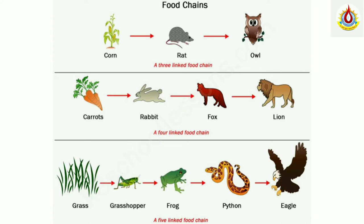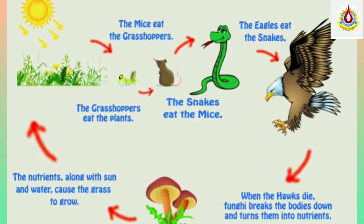A rat eats the corn and an owl eats the rat — this is called a food chain. With the help of the sun, the grass grows, and the grasshopper eats the plants. Then mice eat the grasshopper, the snake eats the mice, and the snake is eaten by the eagle. When the eagle or hawk dies, its body breaks down and turns into nutrients, which along with sun and water cause the grass to grow again. This is how the whole food cycle works.